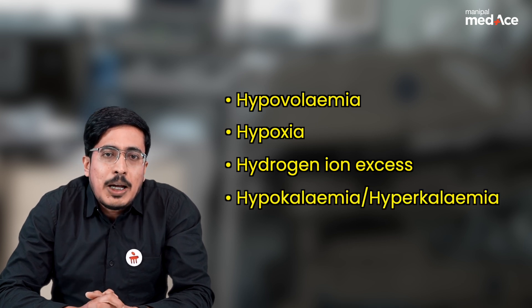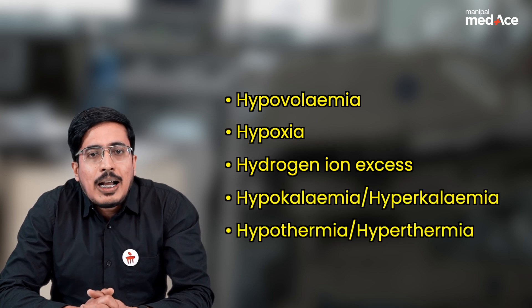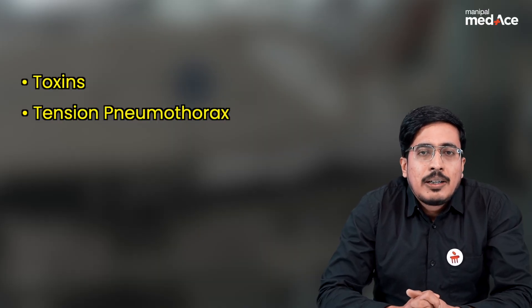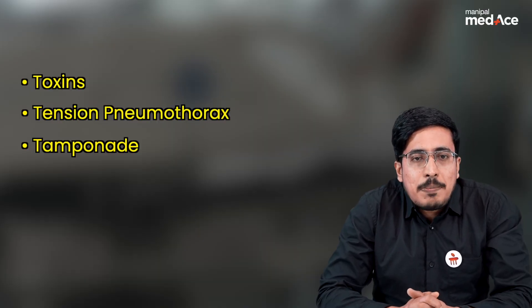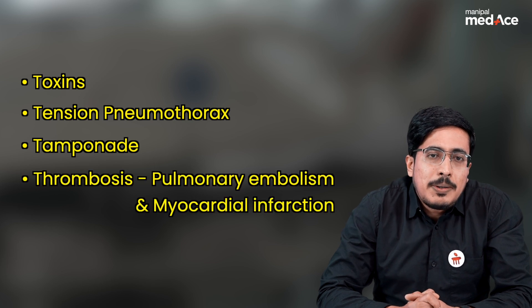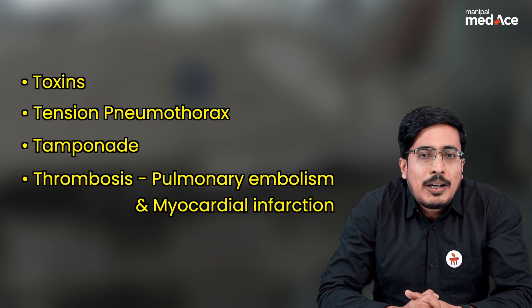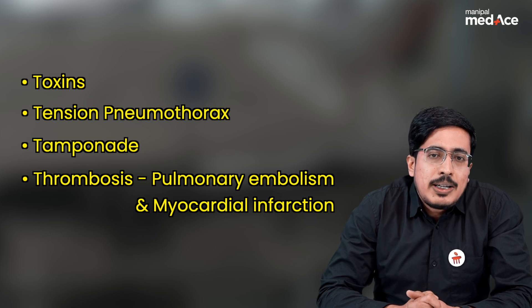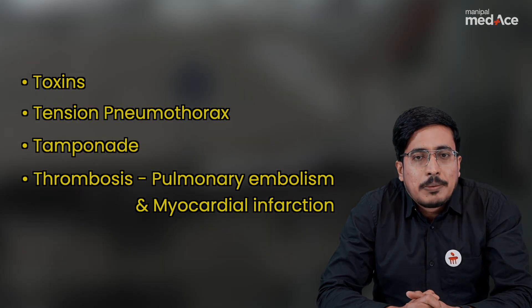Hypothermia and hyperthermia. The T's are toxins, tension pneumothorax, cardiac tamponade, and thrombosis of pulmonary vessels causing pulmonary embolism, and of coronaries causing myocardial infarction.